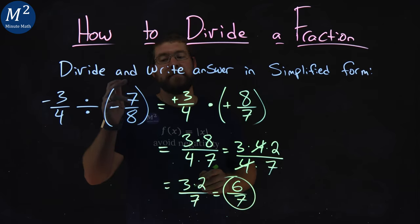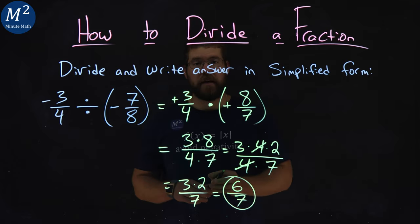Negative three-fourths divided by negative seven-eighths simplifies to be a positive six-sevenths.